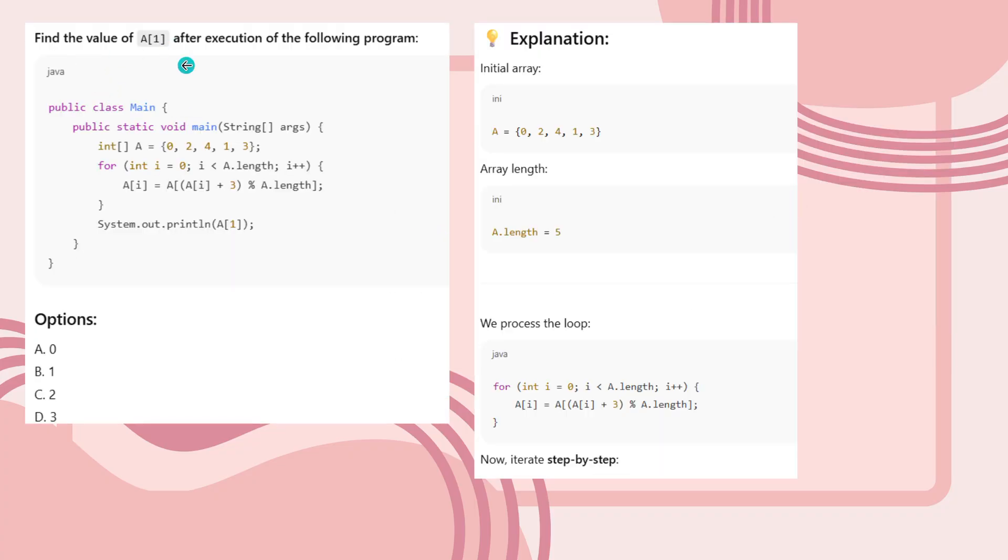Find the value of a[1] after execution of the following program. It's a program, and a is an array with the elements 0, 2, 4, 1, 3. It has a for loop and a function, and it's asking you to print a[1]. Now let's consider here: a[i] means a[1]. A[1] means what? It's zero-based index, so a[1] is 2.